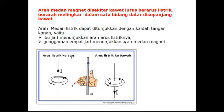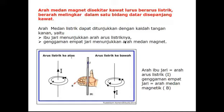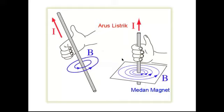Bagaimana arah medan magnet di sekitar kawat lurus berarus listrik? Medan magnet berarah melingkar dalam satu bidang datar di sepanjang kawat. Cara menentukannya menggunakan kaidah tangan kanan, yaitu ibu jari menunjukkan arah arus listrik, sedangkan genggaman empat jari menunjukkan arah medan magnet. Jadi medan magnet yang melingkar berada di sekitar kawat lurus berarus listrik.